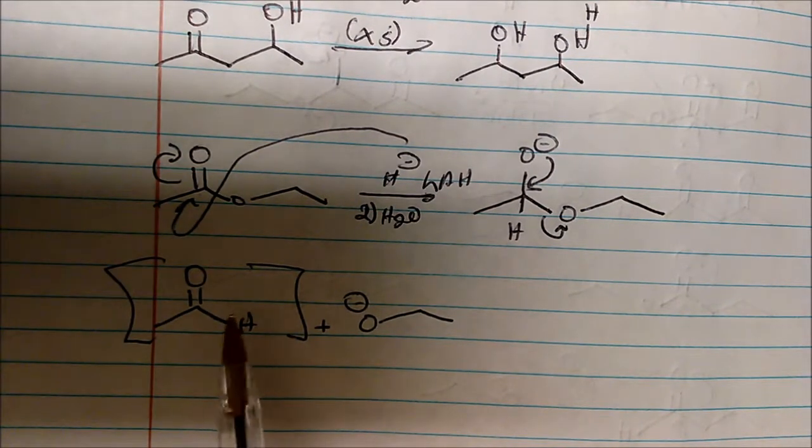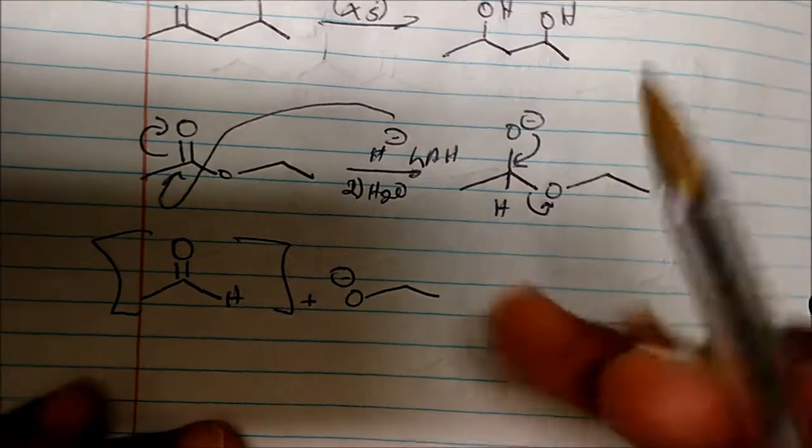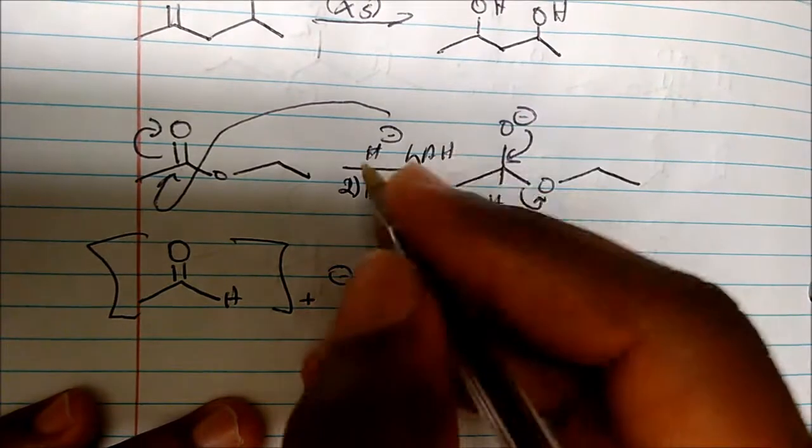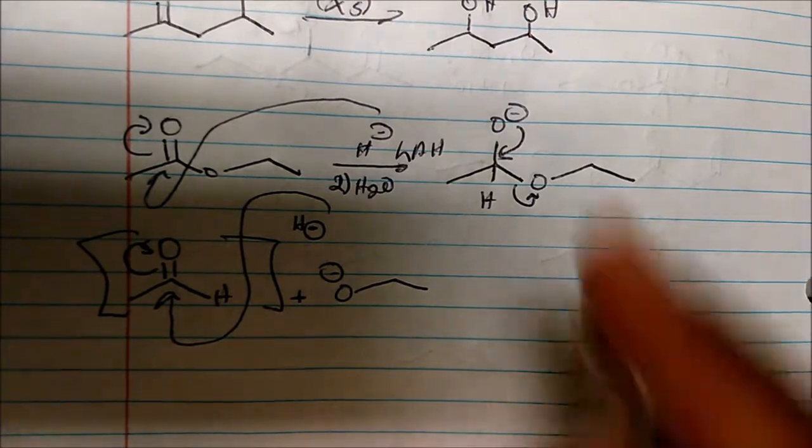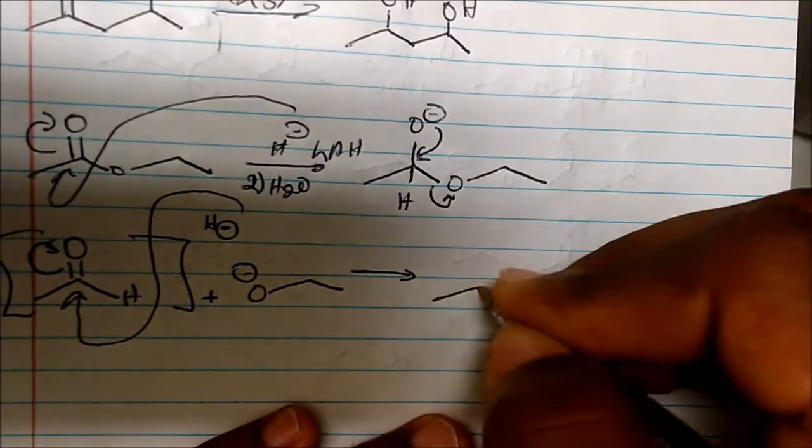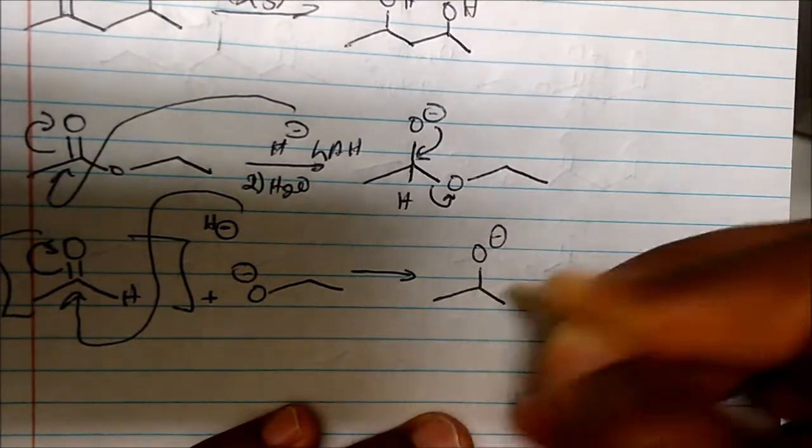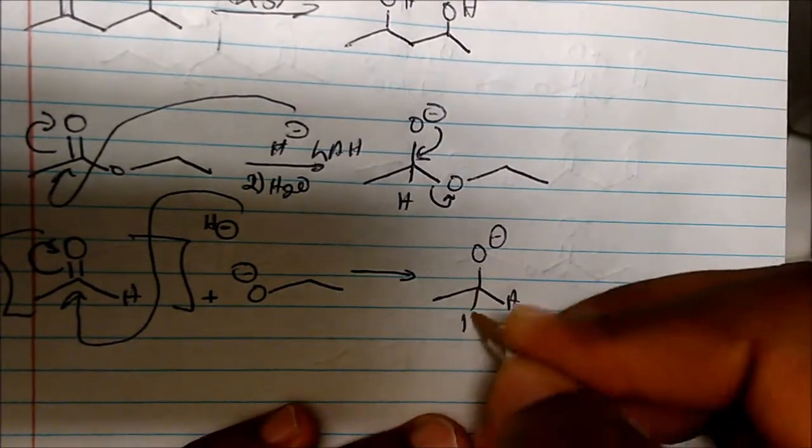The next step in the mechanism is that some sort of H minus comes in to attack the slightly electrophilic carbon and kicks off the electrons onto the oxygen. You get something that looks like this: an oxygen negatively charged. We have a hydrogen that we added in the first step, but we also added another hydrogen.